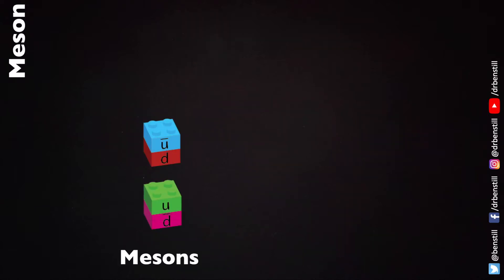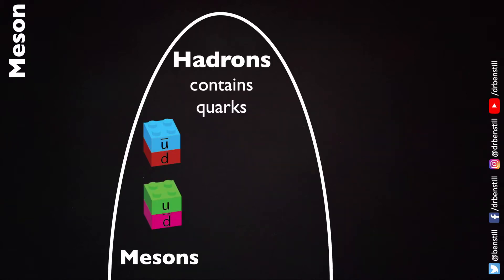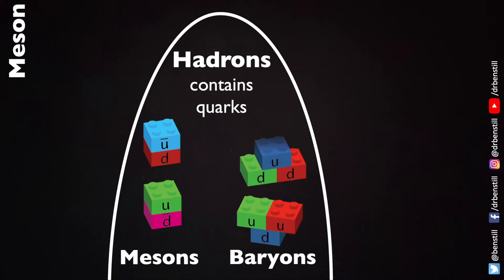Mesons take their place among the other particles as part of the family of hadrons — particles which contain quarks. Other hadrons include the proton and the neutron, which because they are made of three quarks are known as baryons. The mesons and the baryons are composite particles because they are made of smaller things — quarks and antiquarks.